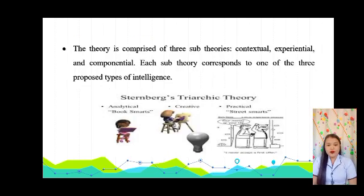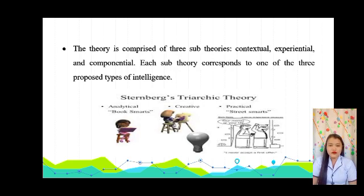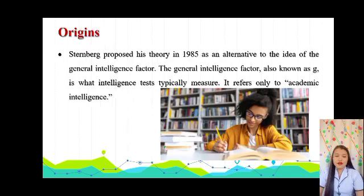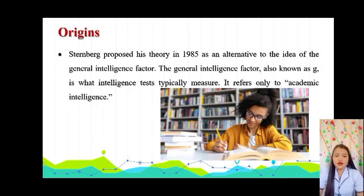The theory is comprised of sub-theories: the Contextual, Experiential, and Componential. Each sub-theory corresponds to one of the three proposed types of intelligence. Sternberg proposed his theory in 1985 as an alternative to the idea of the General Intelligence Factor, also known as G, which is what intelligence tests typically measure and refers only to academic intelligence.